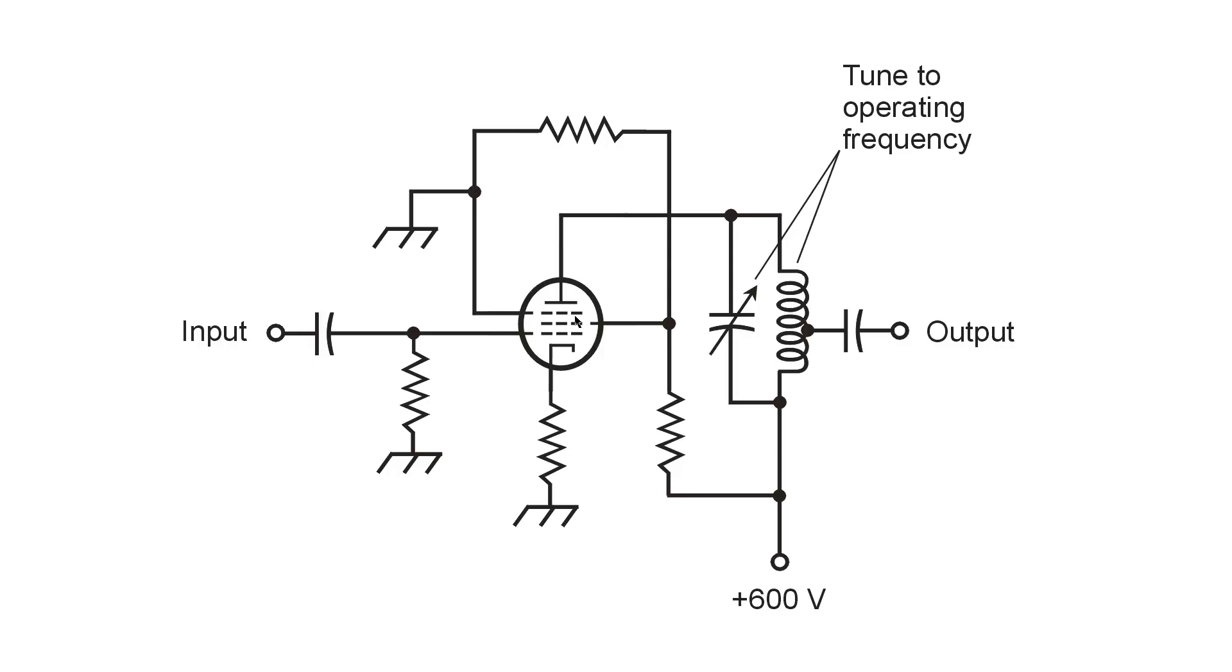As for the suppressor grid, in most pentode tube amplifiers, you'll find the suppressor grid connected directly to ground.